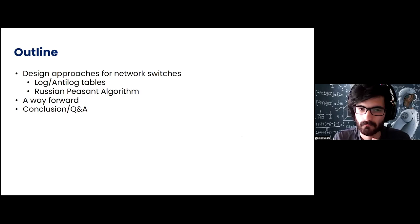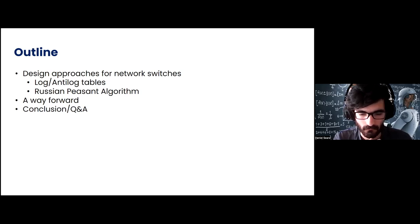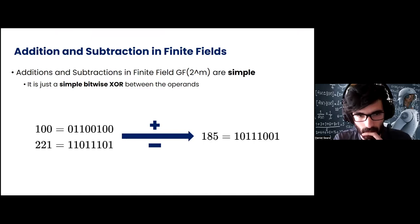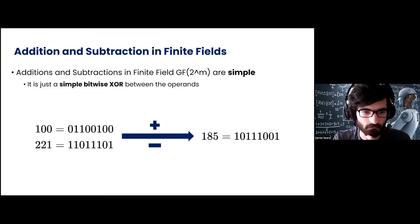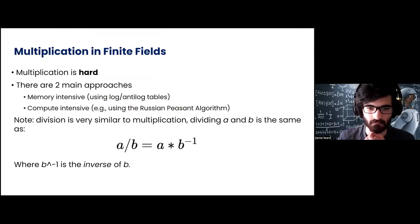Now we're going to talk about the design approaches to implement these primitives in network switches — log and antilog tables and the Russian peasant algorithm. We will show that these approaches aren't really feasible and we will try to show a way forward, ending with a conclusion and time for questions. If you want to do addition and subtraction in finite fields of GF(2^m), it's very simple — it's just a simple bitwise XOR. XOR has the properties of addition and subtraction and always outputs a number that is in the field.